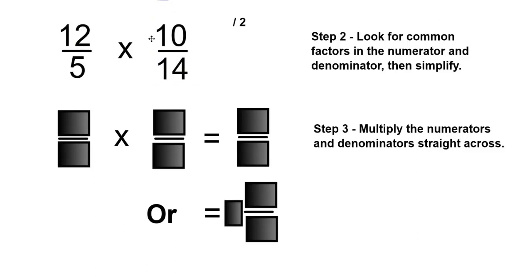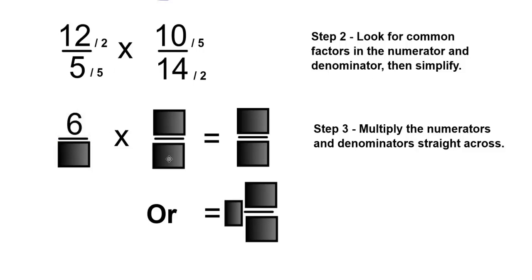Look for common factors in the numerator and denominator, then simplify. 12 and 14 can both be divided by 2, and 10 and 5 can both be divided by 5. 12 divided by 2 is 6, and 14 divided by 2 is 7. 10 divided by 5 is 2, and 5 divided by 5 is 1.